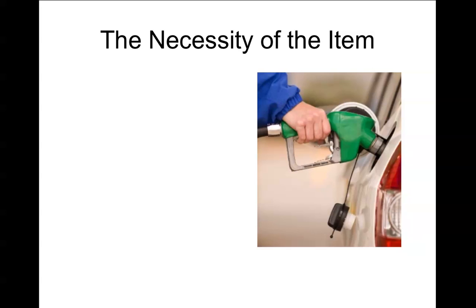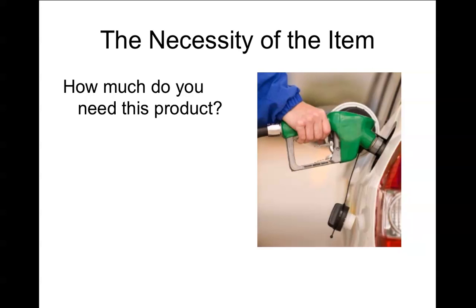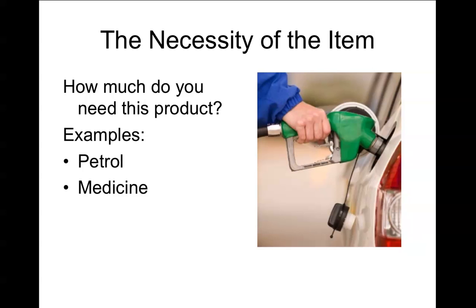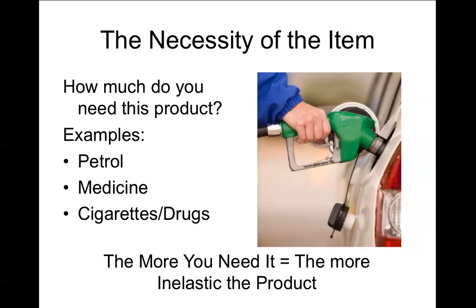The next determinant is the necessity of the item — how much do you need this product? The best example is petrol. If the price changes, unfortunately I need petrol to get to work. Other examples include medicine — you need it, so a price change doesn't really affect how much you buy. Even cigarettes and drugs are a good example: if you're addicted to something, you're still probably going to buy it regardless of the price. The rule is: the more you need the product, the more inelastic it's going to be.